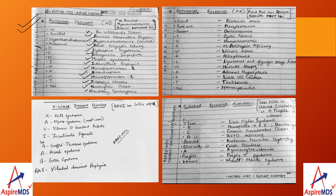For autosomal recessive disorders, the mnemonic is 'FRIED CURRY OR GARAM CHAWAL MUST HAVE.' F stands for Friedreich's ataxia, P for phenylketonuria, G for galactosemia, then cystic fibrosis, hemochromatosis, alpha-1 antitrypsin deficiency, Wilson's disease, alkaptonuria, lysosomal and glycogen storage diseases, muscular atrophy, adrenal hyperplasia, sickle cell disease, thalassemia, and homocystinuria.